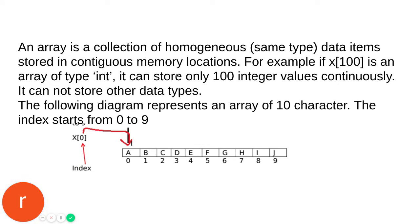For example, if x[100] is an array of type integer, it can store only 100 integer values continuously. In this example, x[10] stores 10 characters in continuous memory locations. Once defined as x[10], the length is 10 and we cannot store more.